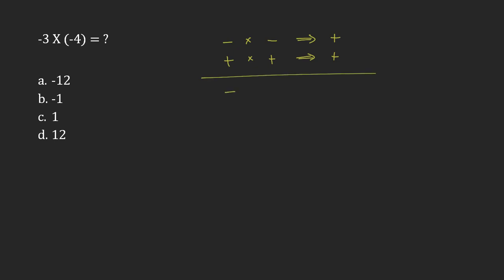It's only when I have negative times positive or positive times negative that I would end up getting a negative result. So I'm going to have a positive result here. It's going to be negative 3 times negative 4. Now that I know the sign, I can just think of 3 times 4, which is 12. So my answer is d, 12.